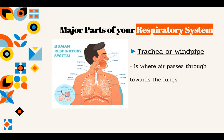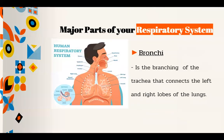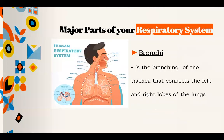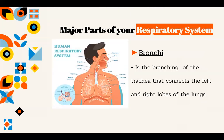The trachea, or windpipe, is where air passes through towards the lungs. The bronchi is the branching of the trachea that connects the left and the right lobes of the lungs.